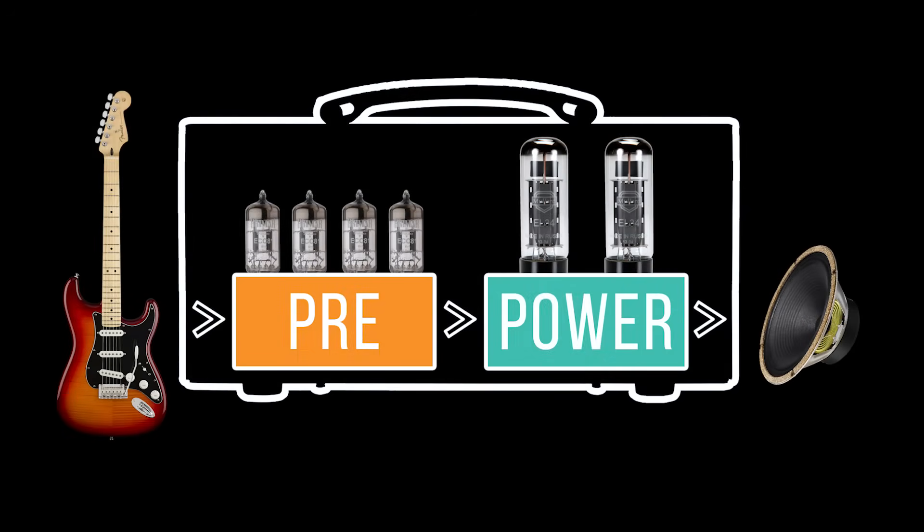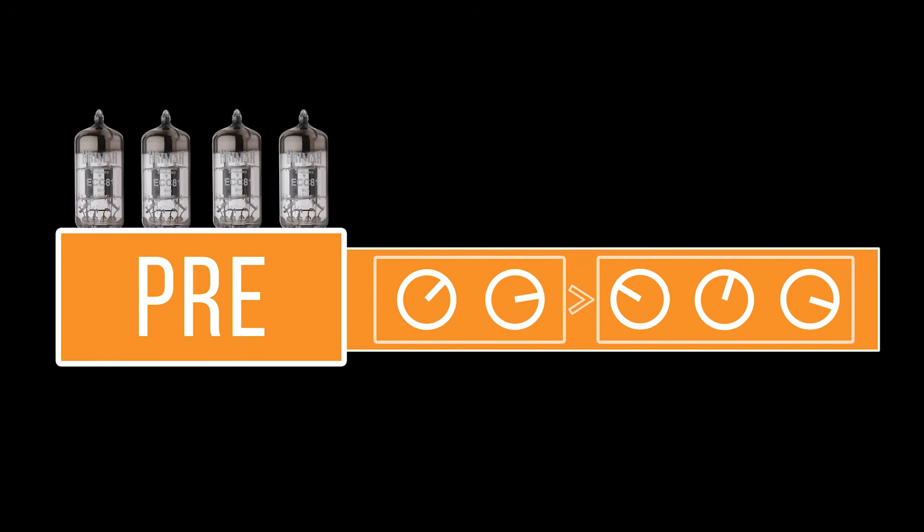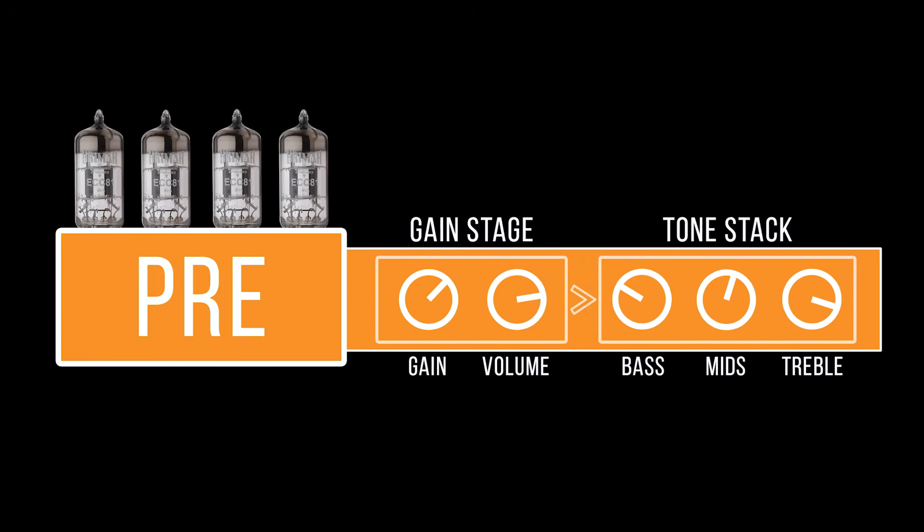Looking at their topology, an amplifier can be divided into two main sections: the preamp and the power amp. The preamp is the main tone shaping section of your amplifier, and it's the first stop for your guitar signal when it enters the amp. The preamp is where most of the amplifier's controls live — gain, channel volume,